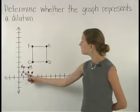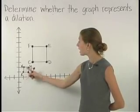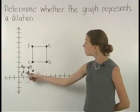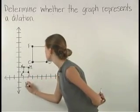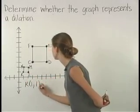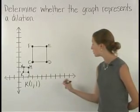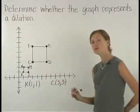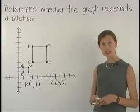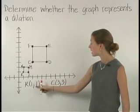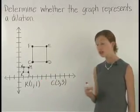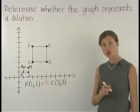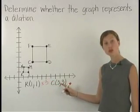For example, notice that point K corresponds to point C. Point K has the coordinates, and point C has the coordinates. We can see that the coordinates of point K have been multiplied by a scale factor of 3 to get the coordinates of point C.